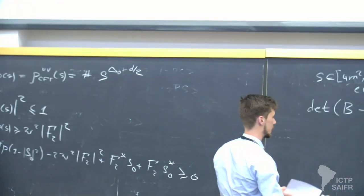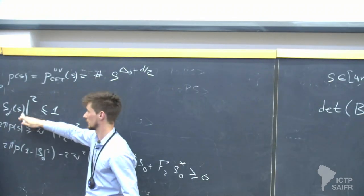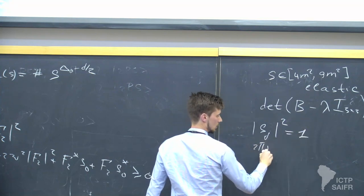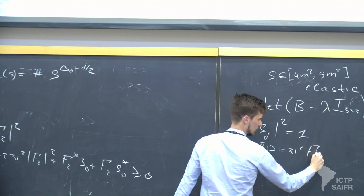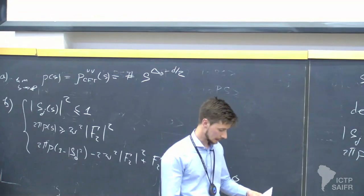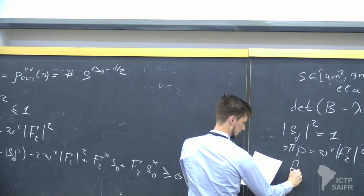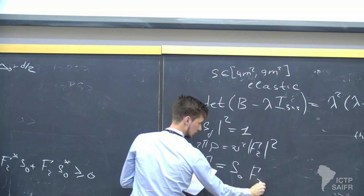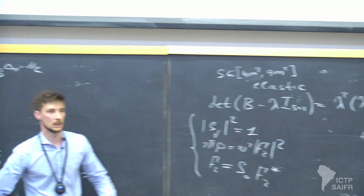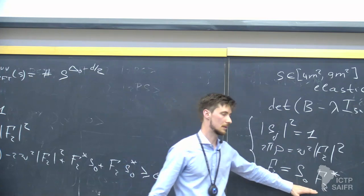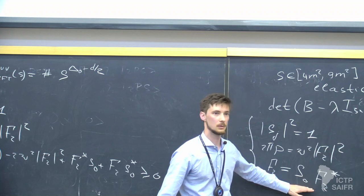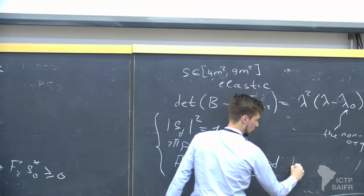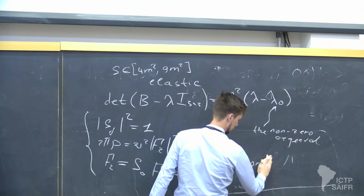This leads to the following constraints. First, the two bounds must be saturated: |S_J|^2 equals 1, and 2pi rho equals omega squared times |F_2|^2. The third constraint is that the form factor F_2 equals S_J times F_2 star. This is a rather non-trivial relation between the partial amplitude and the form factor. In two dimensions, these equations are referred to as Watson's equations.